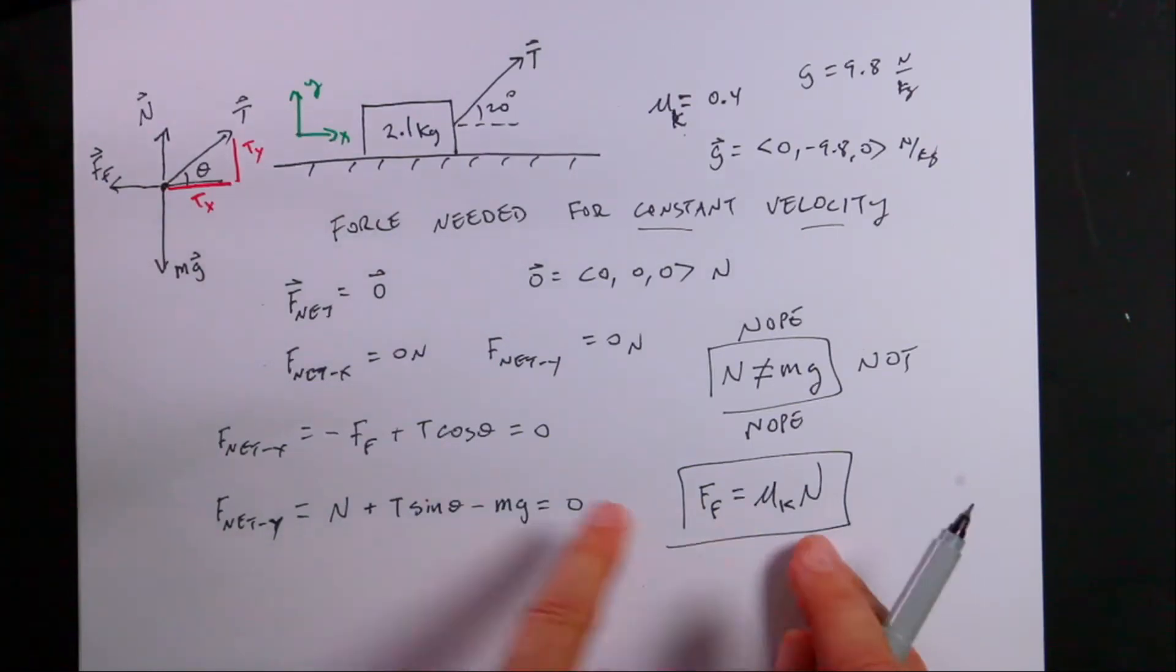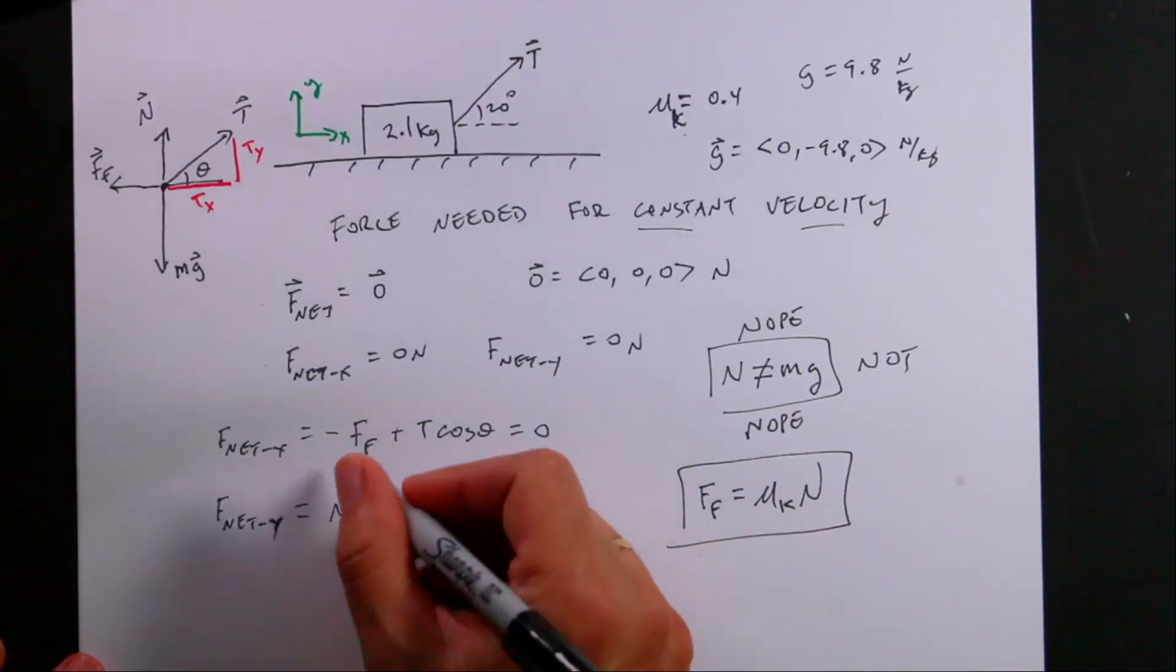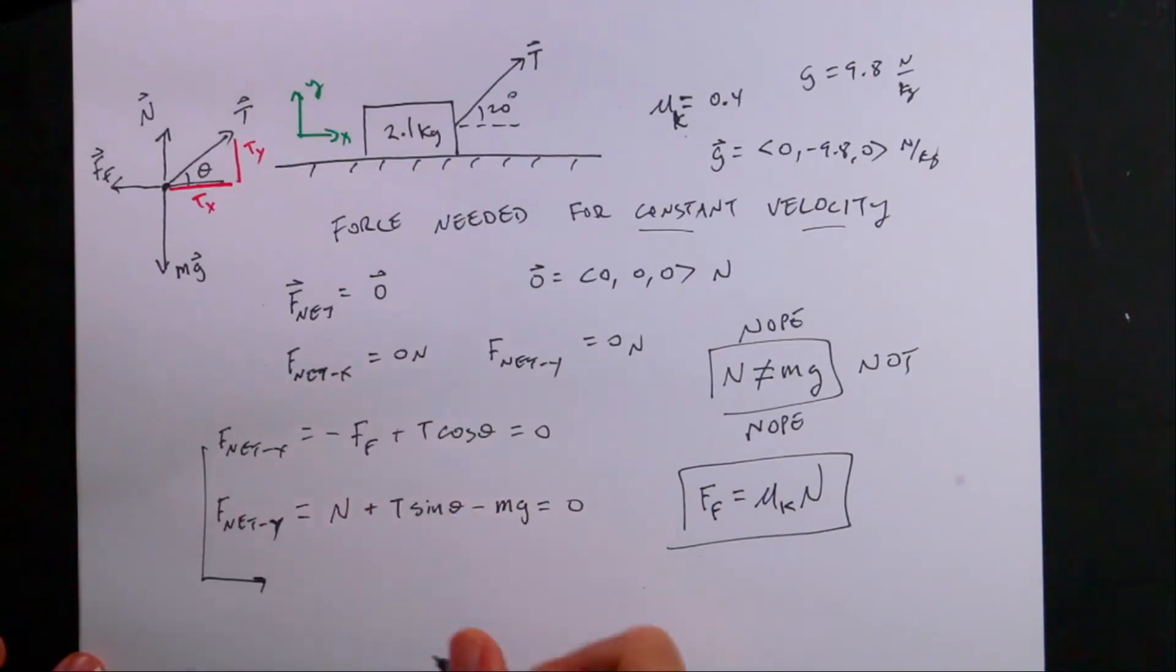So but now I can substitute this n up here and I get this equation becomes negative mu k. That is the Greek letter mu. It's not a u. It's a mu. It's fun to say. n plus t cosine theta equals zero. But look what I have now. n, t. I know everything else. n, t. I know everything else. So now I have two equations, two unknowns and I can indeed solve that.